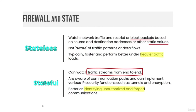Stateless firewalls watch network traffic and restrict or block packets based on source and destination addresses or other static values. They are not aware of traffic patterns or data flows, but are typically faster and perform better under heavier traffic loads. Stateful firewalls can watch traffic streams from end to end. They are aware of communication paths and can implement various IP security functions such as tunnels and encryption, and are better at identifying unauthorized or forged communications.